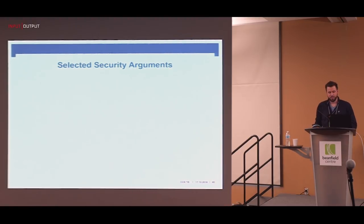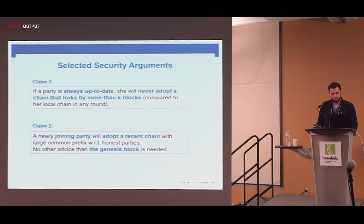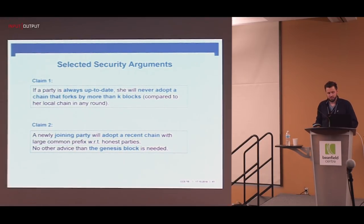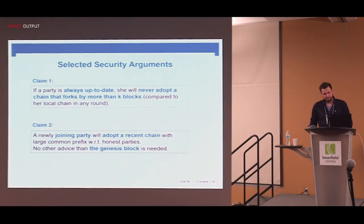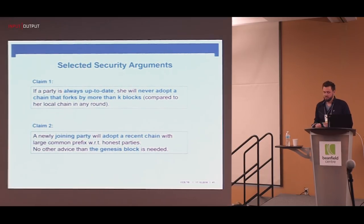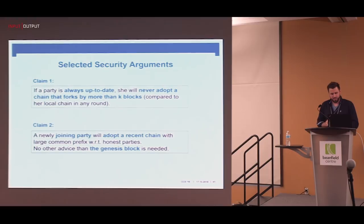We basically have two important claims in the paper. Claim one: in the simpler setting where everybody is always up to date from the beginning — possibly sleeping but always present — nobody would ever adopt a chain that forks by too much, so the new condition is never actually invoked. More importantly, claim two: if a new party now joins the execution, it can just observe the network, be served with a couple of chains, and after a certain time automatically pick the chain that shares a large common prefix with the honest parties. That's what we wanted to achieve.